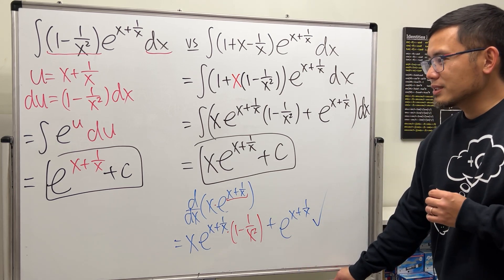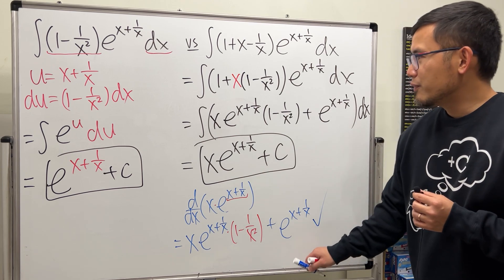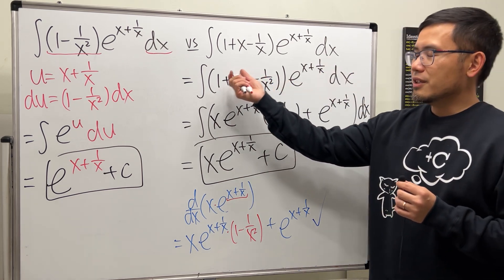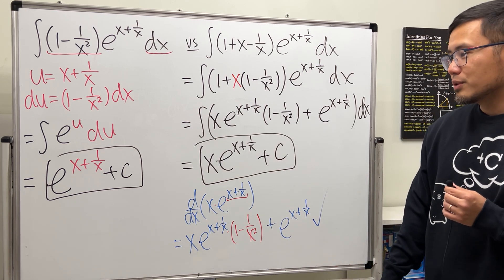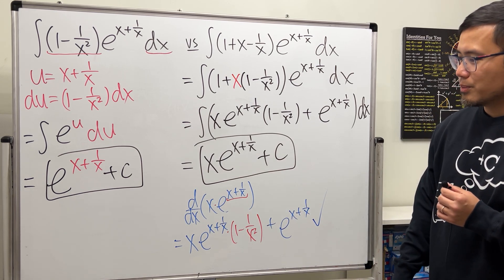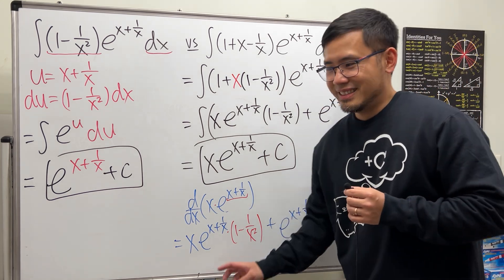So that's pretty much it. And of course, some of you guys know a formula whenever you have e to the y times the function plus the derivative function. Yeah, I would love to write down the formula for you guys, but I don't think the board is big enough. So that's it.